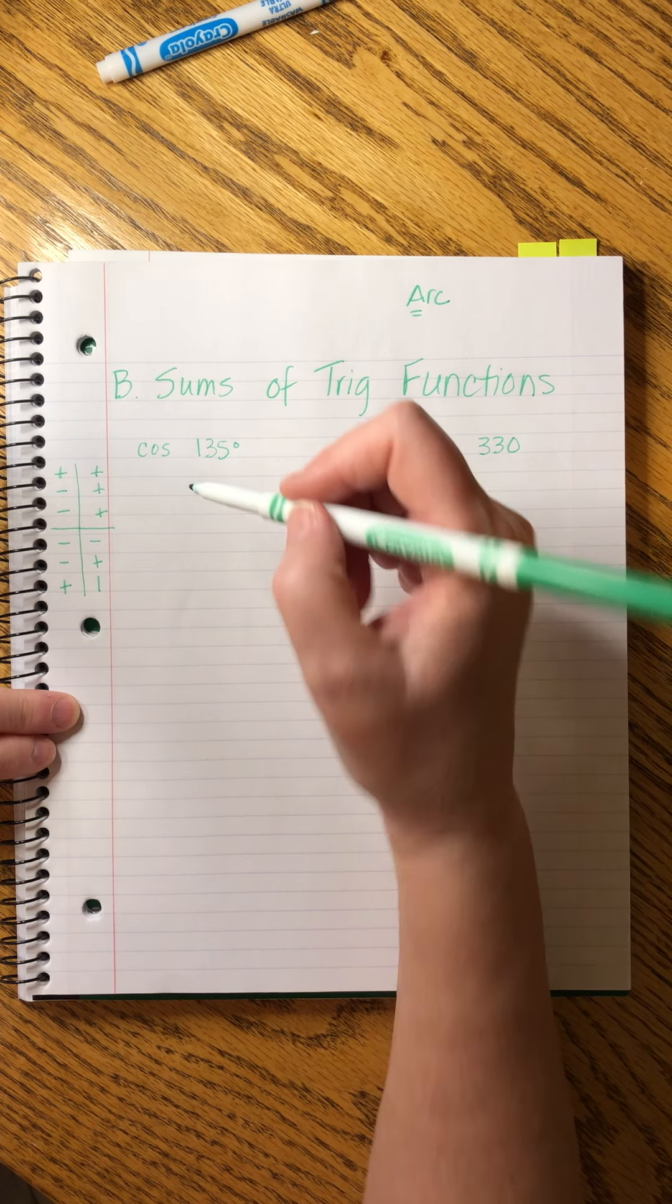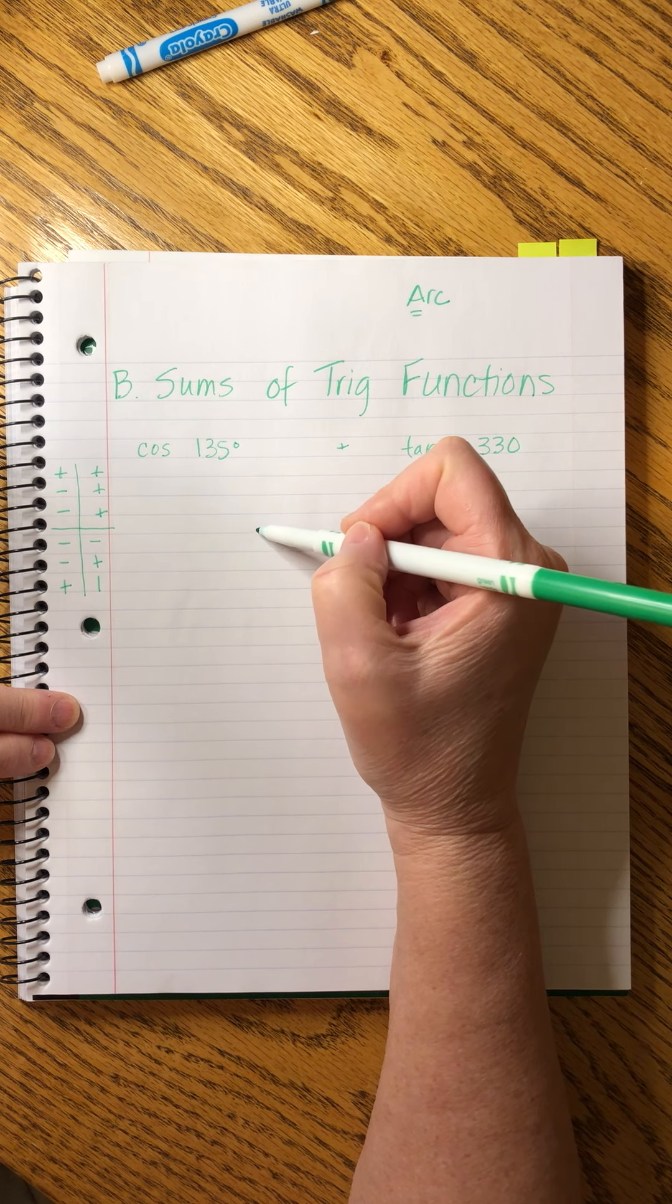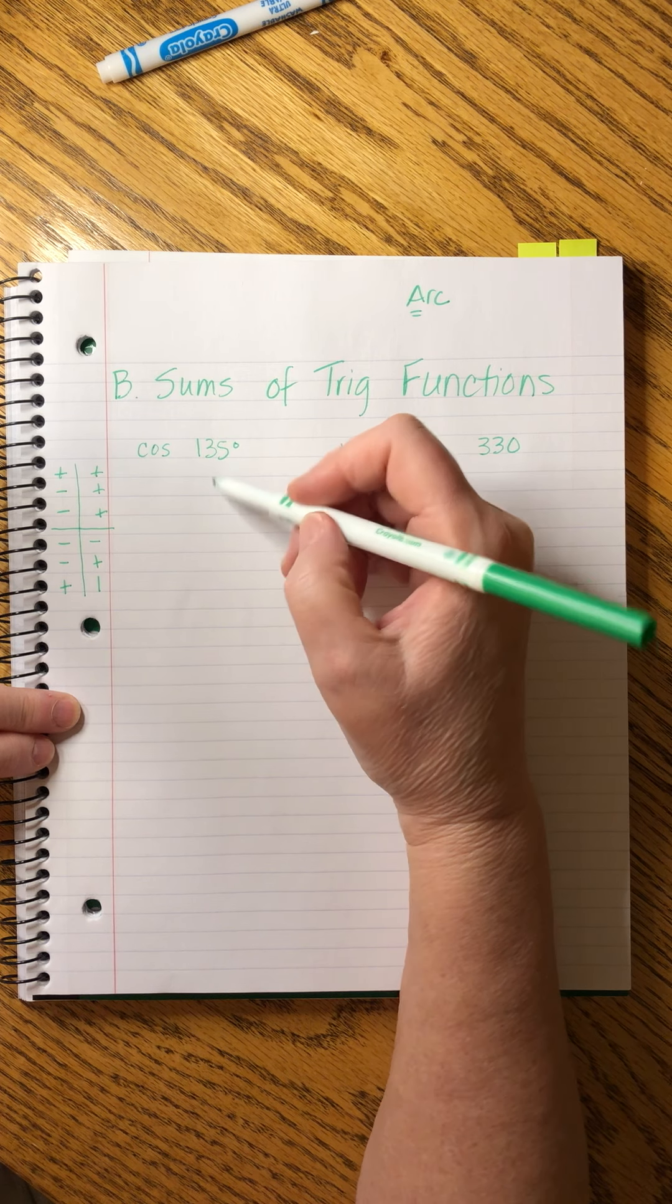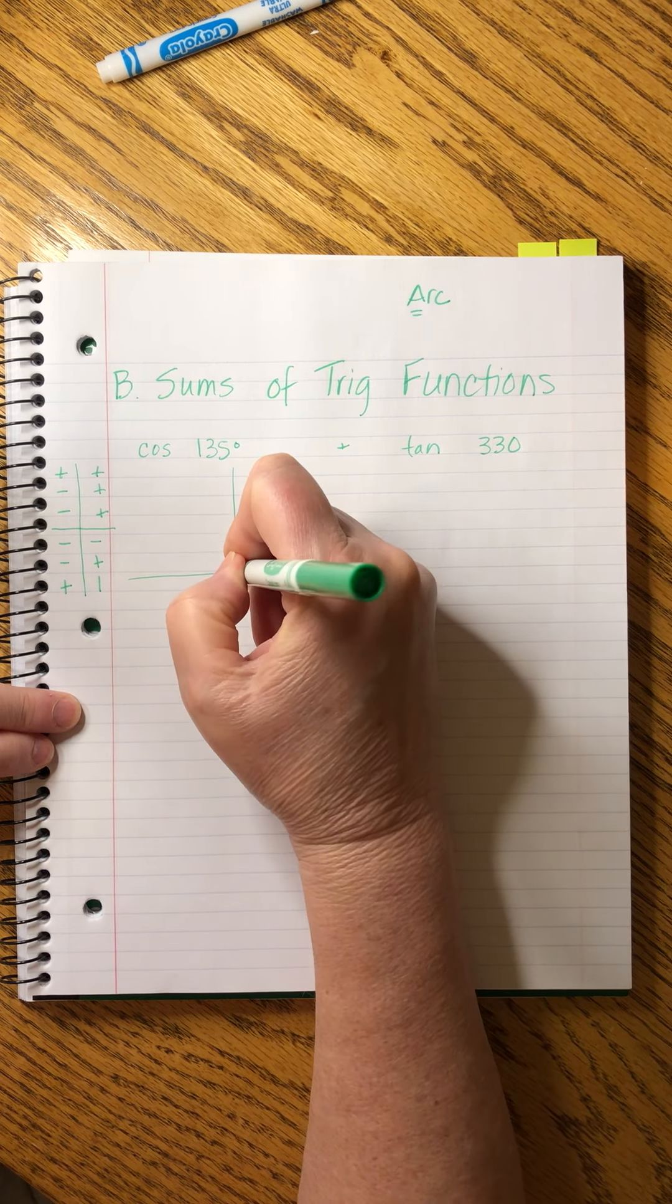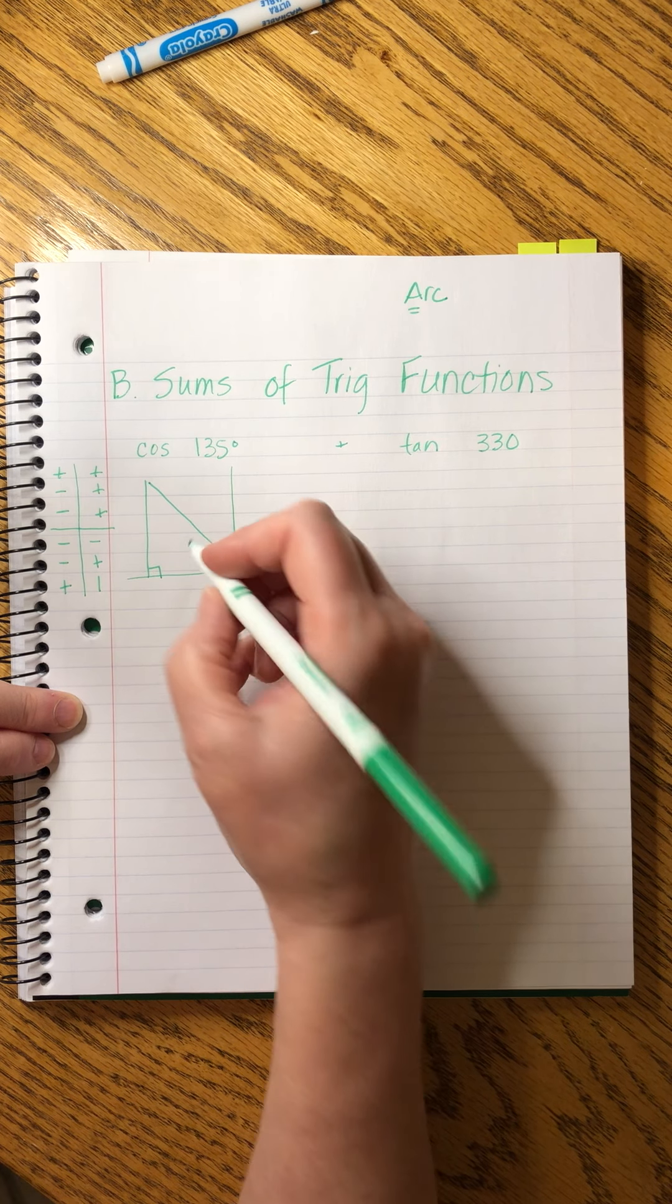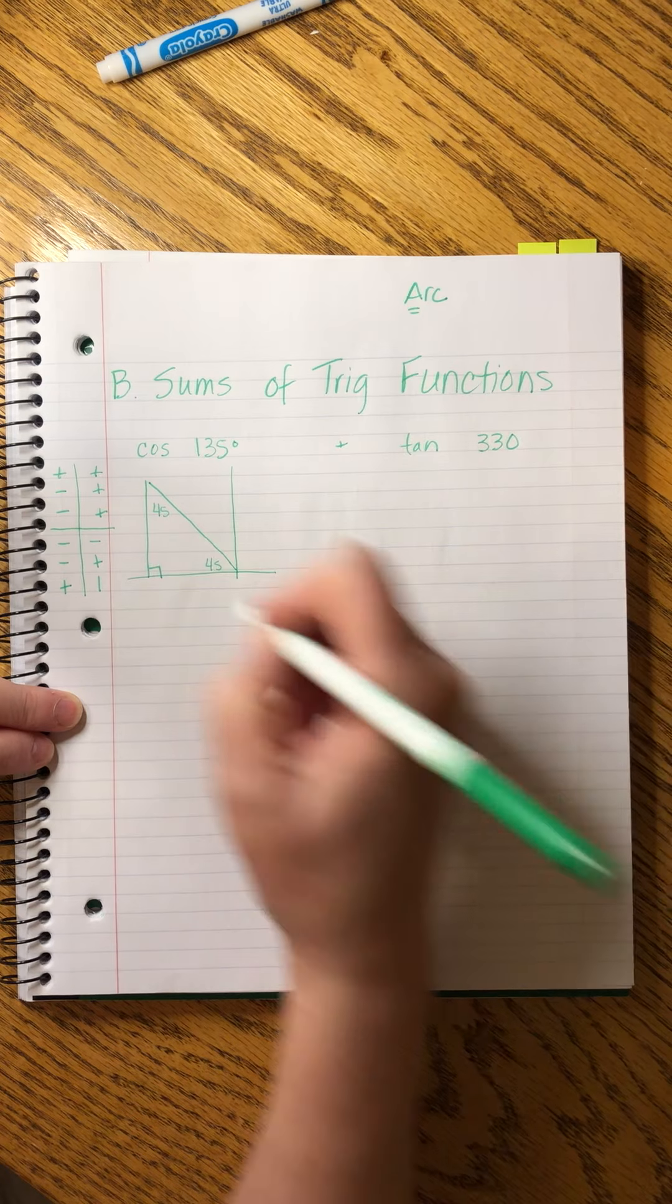Cosine of 135. What quadrant will that be in? It's positive. So that means I'm going to go 90 and then I'm going to go 45. So it's going to be in the second quadrant and it's going to be a 45 degree angle.